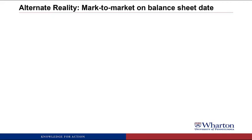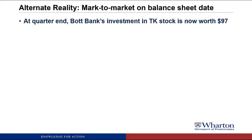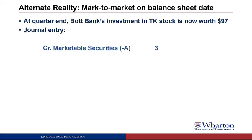To get more practice and to see what happens if you end up getting an unrealized loss, we're going to do an alternate reality version of the final part of the example. We're going to go back to the mark-to-market on the balance sheet date, but instead of the TK stock going up to 103, in our alternate reality at the quarter end the investment in TK stock is now 97. For the journal entry, we have to credit marketable securities by three. We originally bought the marketable securities at 100, and now at the balance sheet date they're worth 97. To get the asset account from 100 down to 97, we credit the account by three. The debit here is going to be a loss on investment, which will show up in the income statement and eventually work its way to stockholders' equity through retained earnings. Under the trading securities method, we book this loss on the income statement.